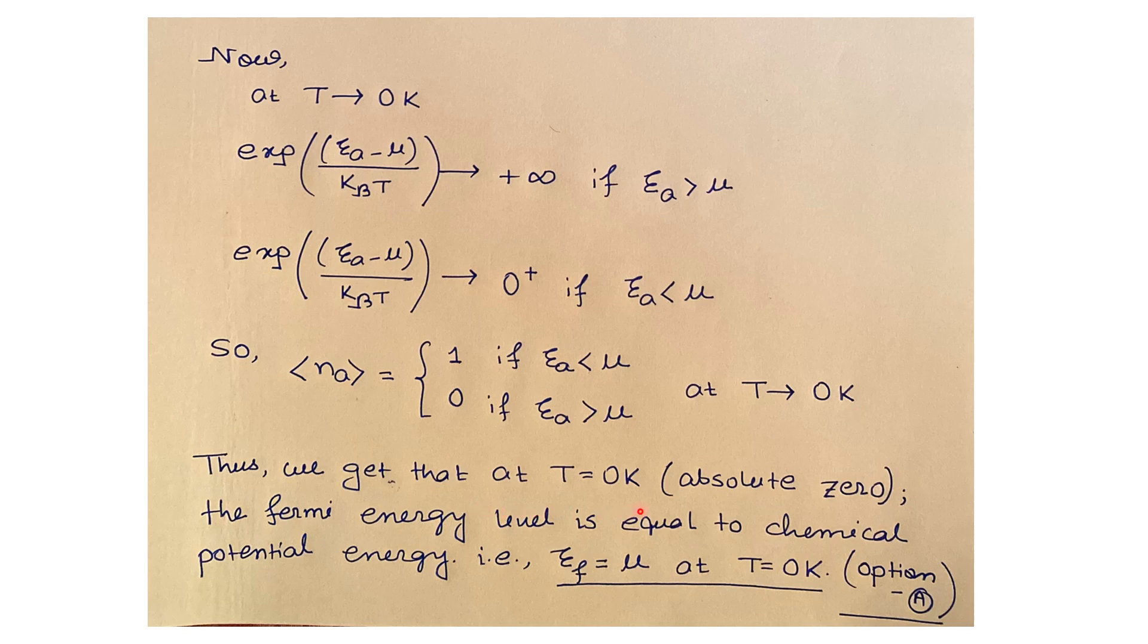So from here we can conclude that at T equals zero Kelvin, that is absolute zero, the Fermi energy level is equal to chemical potential energy, that is Ef equals μ at T equals zero Kelvin. So our option A is correct in this case.